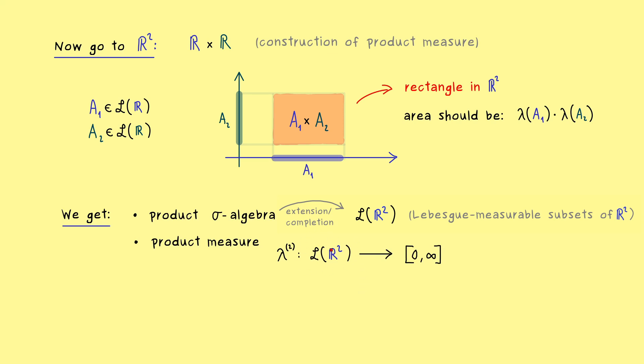Hence, each Lebesgue measurable subset here gets a well-defined area between zero and infinity. And now you already know, this one we also simply call the Lebesgue measure on R2.